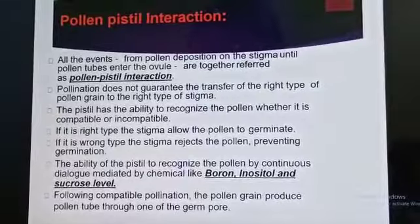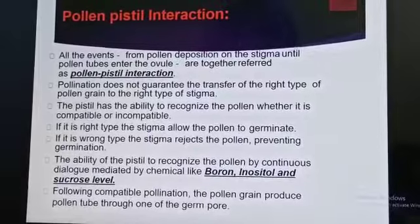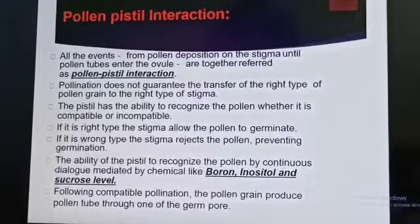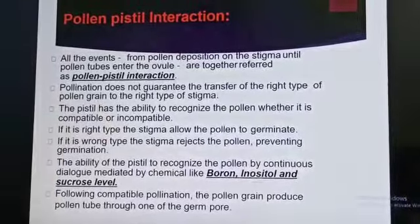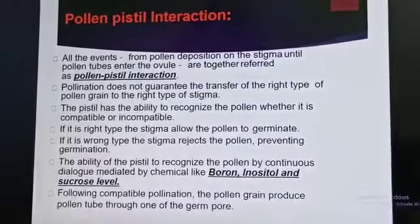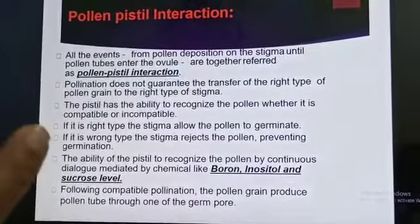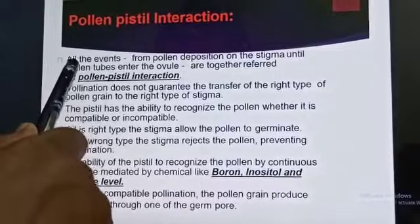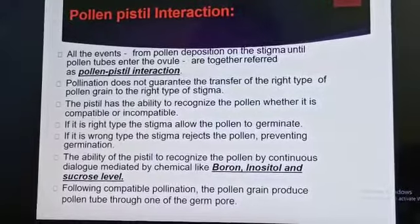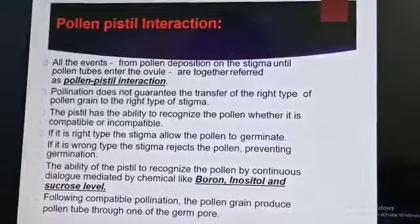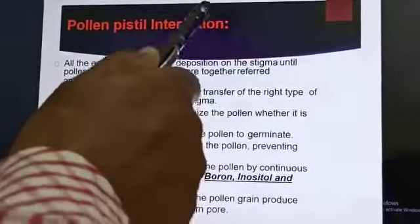Pollen-pistil interaction is very important — it carries three marks in examinations. The pistil consists of stigma, style, and ovary — these are the three parts. Pollen grains are deposited on the stigma, they adhere to it, and they produce pollen tubes. The pollen grain can be ruptured; the exine is extended for the pollen tube, and the pollen tube grows through the style.